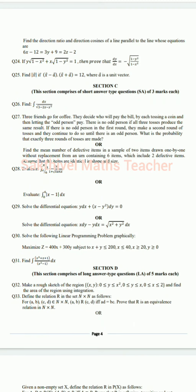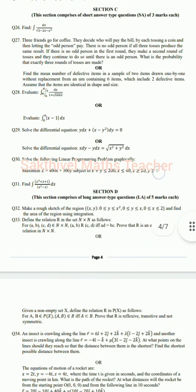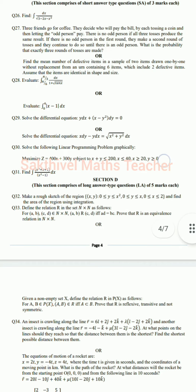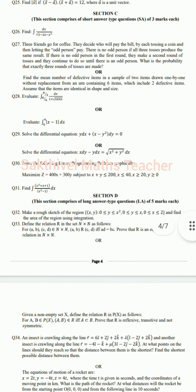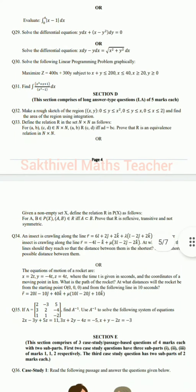For Section C, the three-mark questions, totally six questions are given. Three internal choices are provided - for question number 27, question number 28, and question number 29, all three have internal choice. For Section D, the five-mark questions, they asked four questions: 32, 33, 34, and 35. Two internal choices are given - one for question 33 and one for question 34.